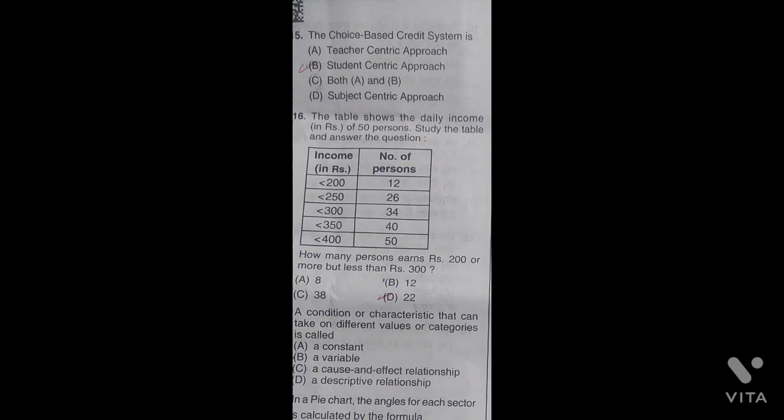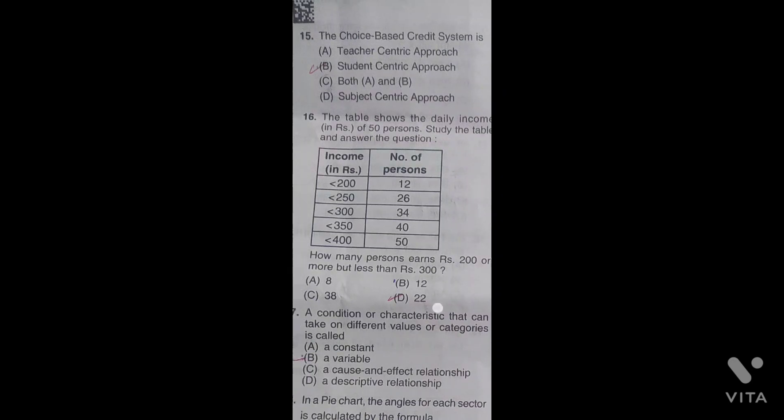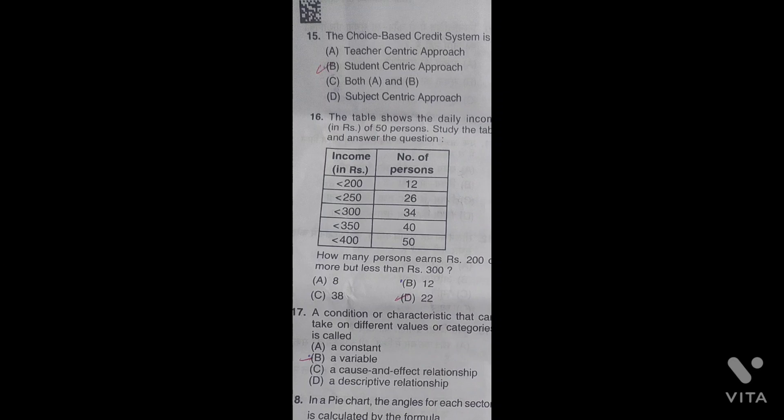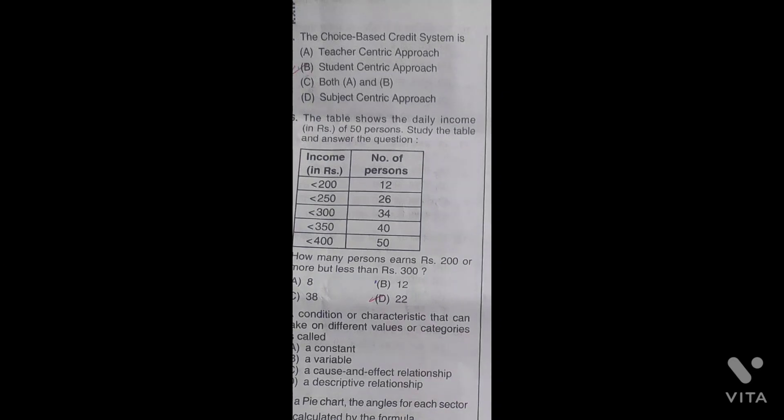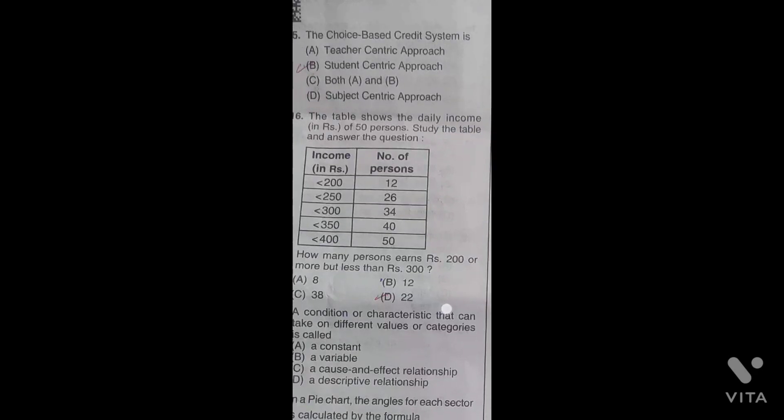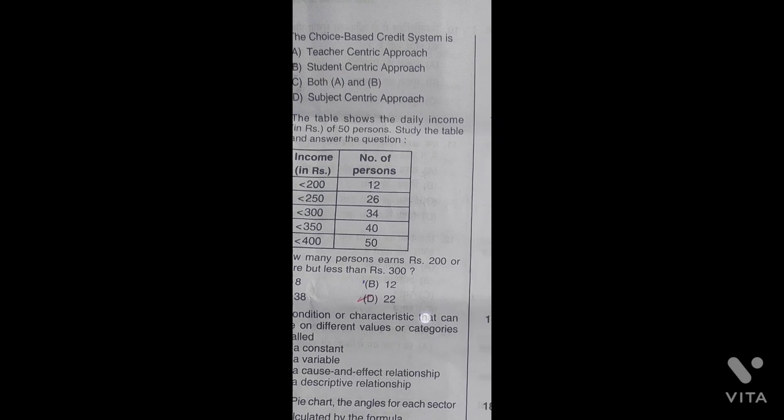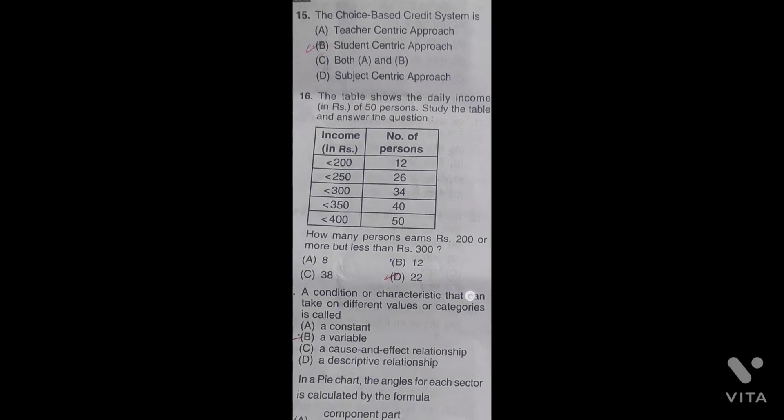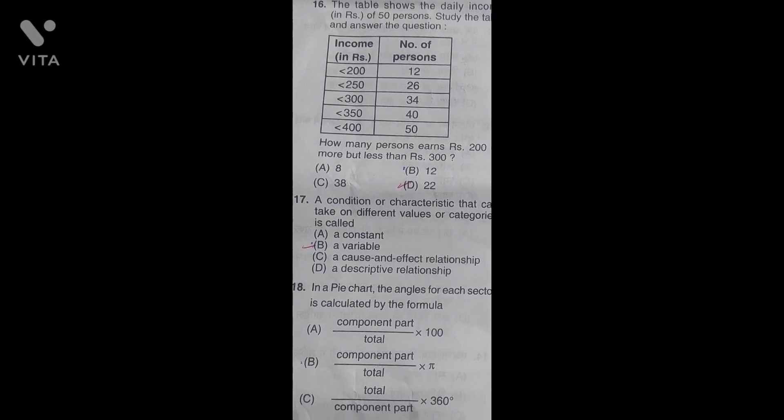If we have a table with income data, we have to calculate how much has been earned. If we see the correct answer directly, the correct answer is 22. The correct option is D.